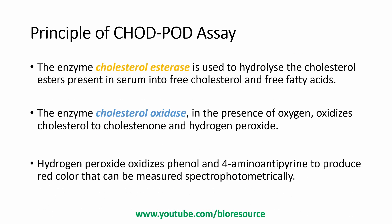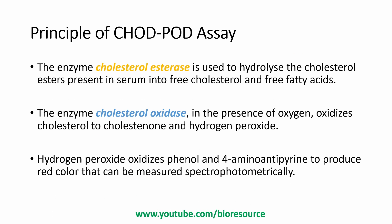Now let's discuss the principle of the cholesterol assay. The enzyme cholesterol esterase is used to hydrolyze the cholesterol esters present in the serum, converting them into free cholesterol and free fatty acids. Next, the enzyme cholesterol oxidase, in the presence of oxygen, oxidizes the cholesterol to cholestanone and hydrogen peroxide. This hydrogen peroxide then reacts with aminoantipyrine in the presence of peroxidase to produce a red color.